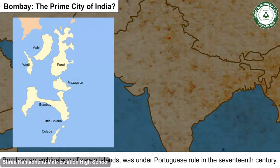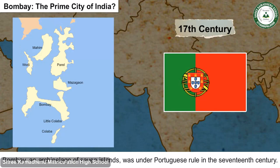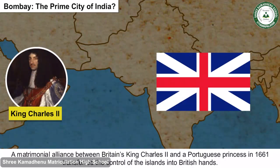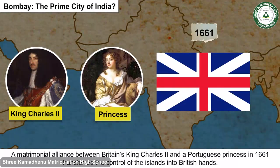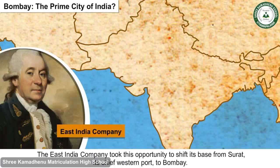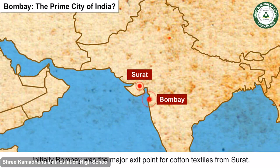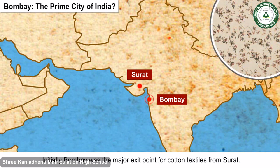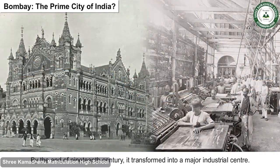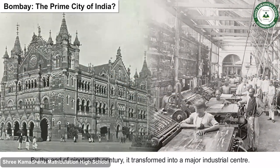Bombay, an archipelago of seven islands, was under Portuguese rule in the 17th century. A matrimonial alliance between Britain's King Charles II and a Portuguese princess in 1661 transferred control of the islands into British hands. The East India Company seized this opportunity to shift its base from Surat, its chief western port, to Bombay. Initially, Bombay was the major exit point for cotton textiles from Surat. Later, it became an important administrative centre in western India, and by the end of the 19th century, it had transformed into a major industrial centre.